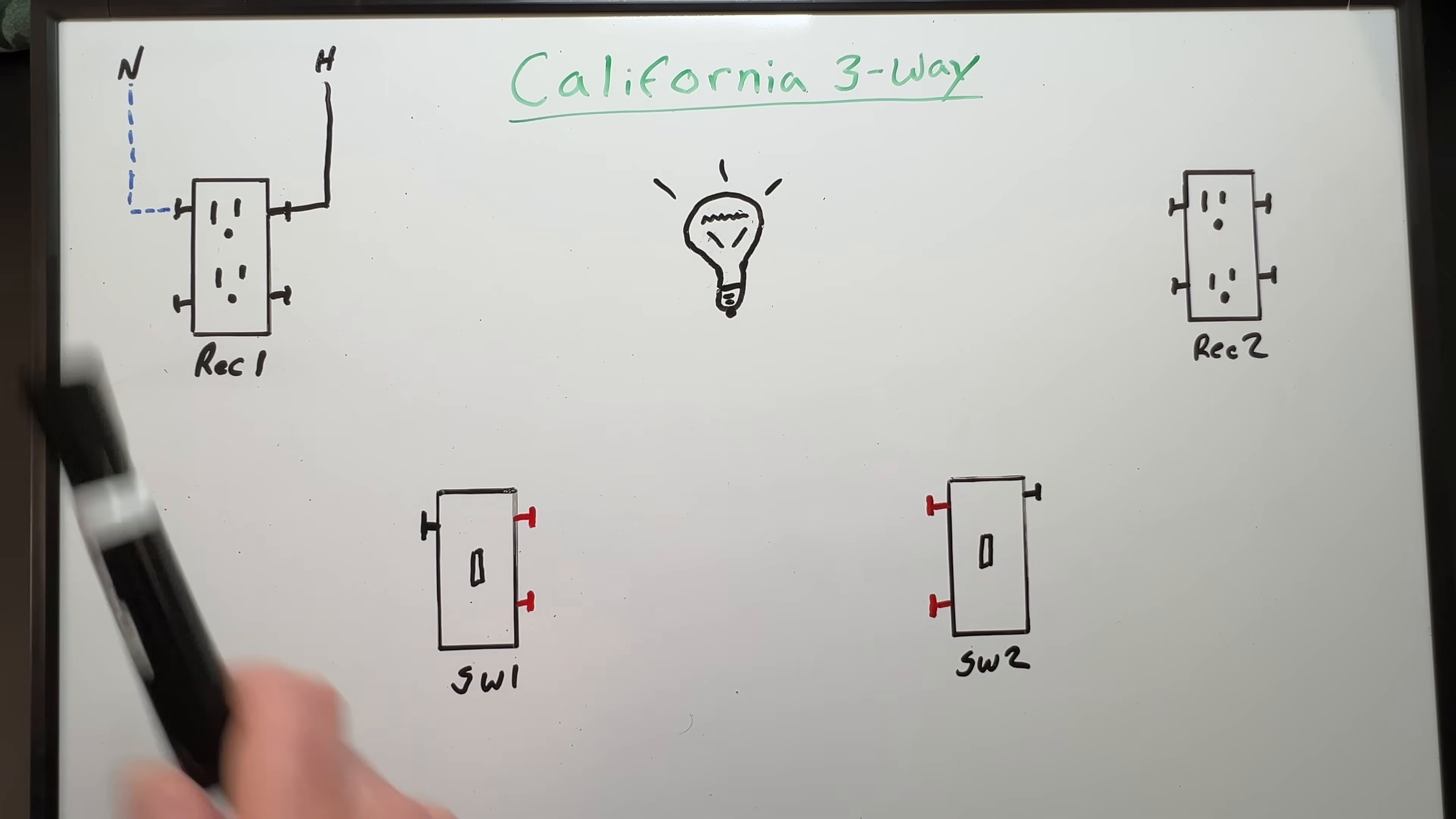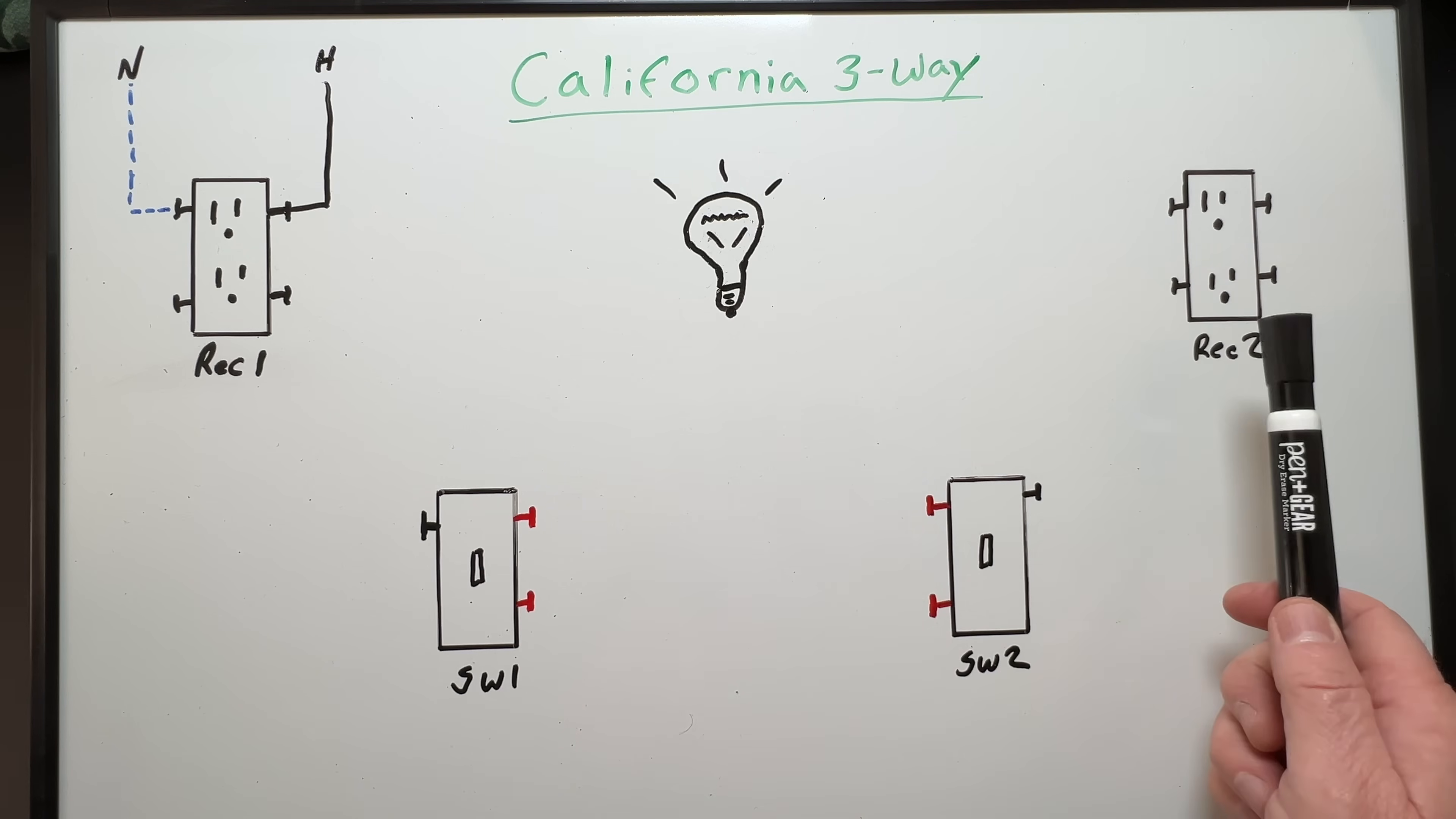We're going to carry unswitched power from receptacle one to switch one to switch two and then on to receptacle two. Our neutral will bypass the switches altogether. And then of course, each switch will control our light.